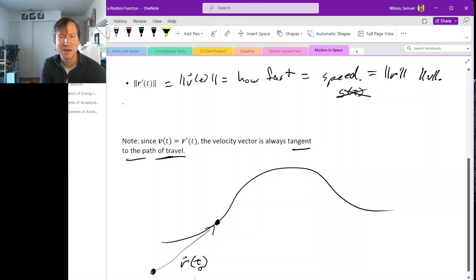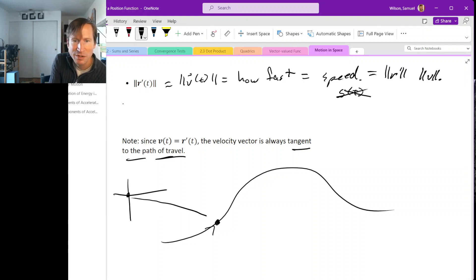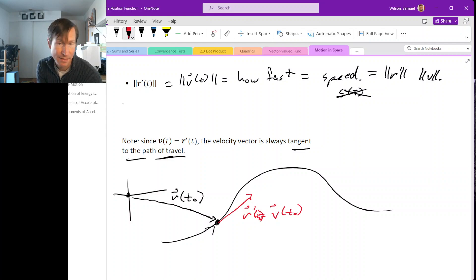Actually, let me move my coordinate system, because the picture I was about to draw makes it look as though r is parallel to v, but that's not always the case. So let me put my origin down here, or over here. So here we have our position vector, so that's r of some time, t-naught. And the velocity vector, if we're traveling left to right along this curve, the velocity vector r-prime at t-naught is going to be parallel to our path.